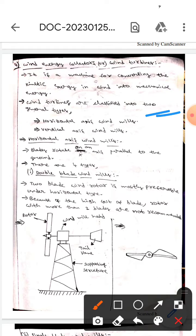Wind turbines are classified into two types. They are horizontal axis windmills, and the next one is vertical axis windmills.